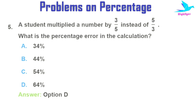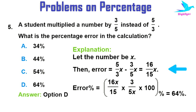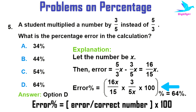Next question: a student multiplied a number by 3/5 instead of 5/3. What is the percentage error in the calculation? Options are: 34%, 44%, 54%, or 64%. The right answer is option D: 64%. Let the number be x. Error = 5/3 × x − 3/5 × x = 16/15 × x. The error percentage = (error / correct value) × 100 = (16x/15) ÷ (5x/3) × 100 = 64 percent.